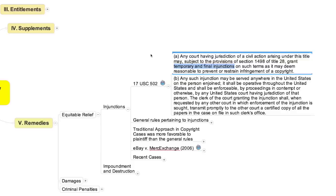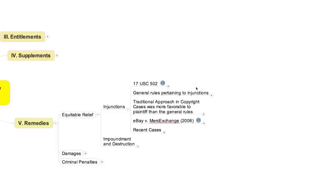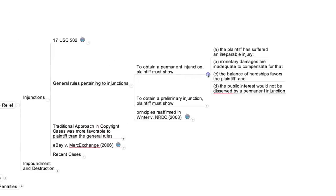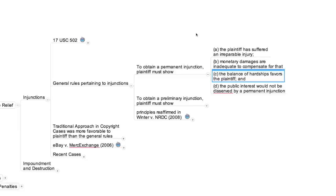The principles governing when it's appropriate for courts to issue either of these two types of injunction are set forth on your screen. These principles were developed by the federal courts to govern equitable relief in general. The traditional rule was that a plaintiff, in order to obtain a permanent injunction, must show: first, that she has suffered an irreparable injury; second, that monetary damages would be inadequate to compensate her for that injury; third, that she would suffer more serious hardship if an injunction were denied than would the defendant if an injunction were granted; and finally, that the public interest would not be disserved by the issuance of an injunction.